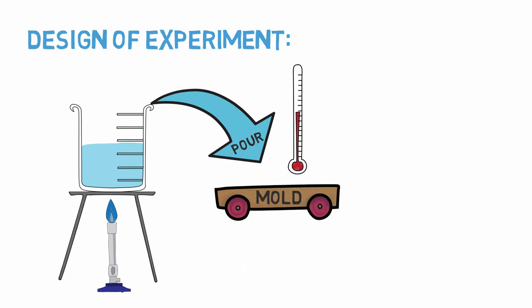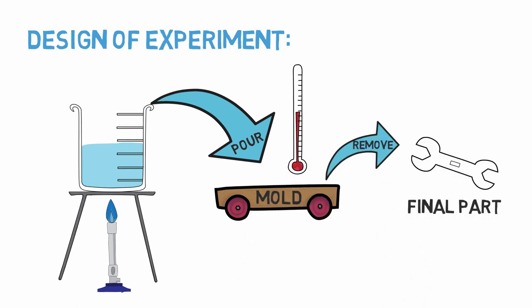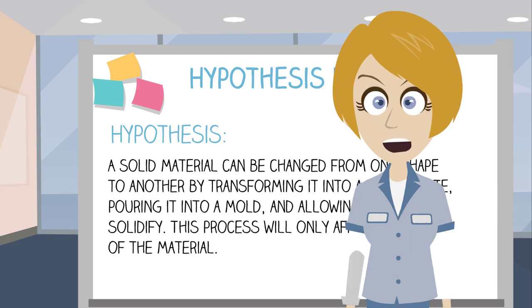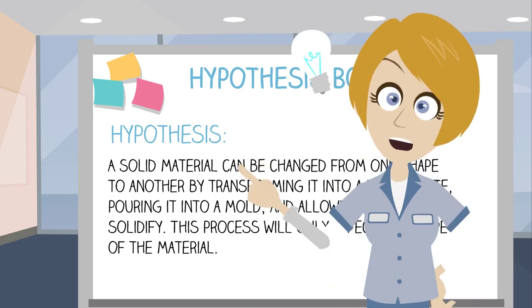To evaluate the first half of our hypothesis, we can look at the final shape of the solidified part and see how effective the process was. The second half of the hypothesis requires a bit more investigation. We hypothesized that only the shape would be affected by this process, so we should find a way to compare the state of the material before and after it goes through this process.